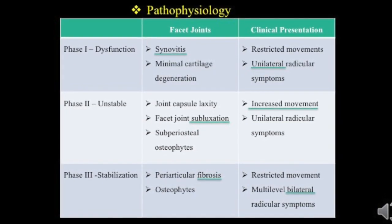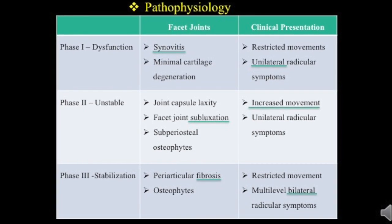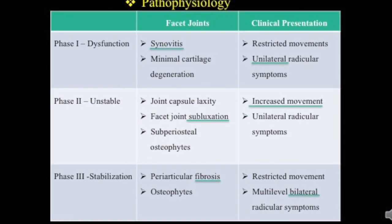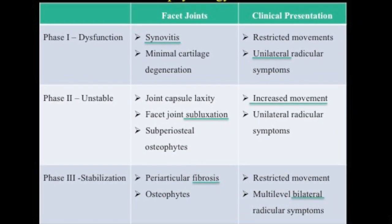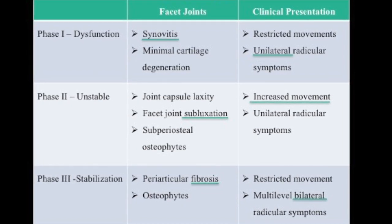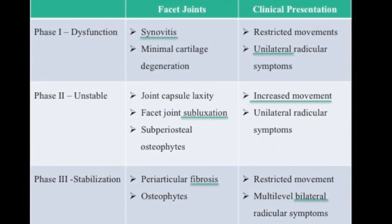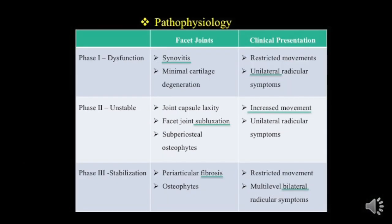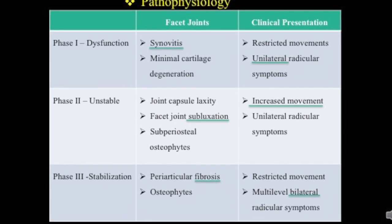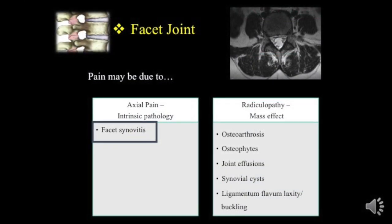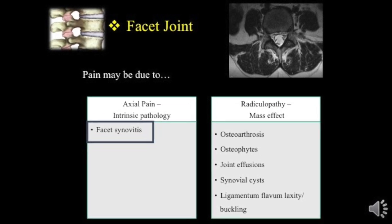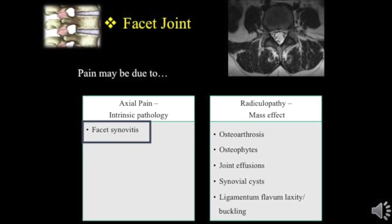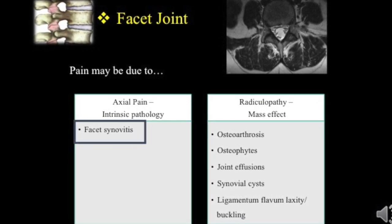In the dysfunction phase there is early synovitis and there may be unilateral radicular symptoms. In phase two there is subluxation of the facet joints and increased movement can be the clinical presentation. In phase three there is stabilization with periarticular fibrosis, and the person might have multi-level bilateral radicular symptoms. Pain may be due to intrinsic pathology in the facet joint or due to mass effect secondary to osteophytes, effusion, or synovial cysts.